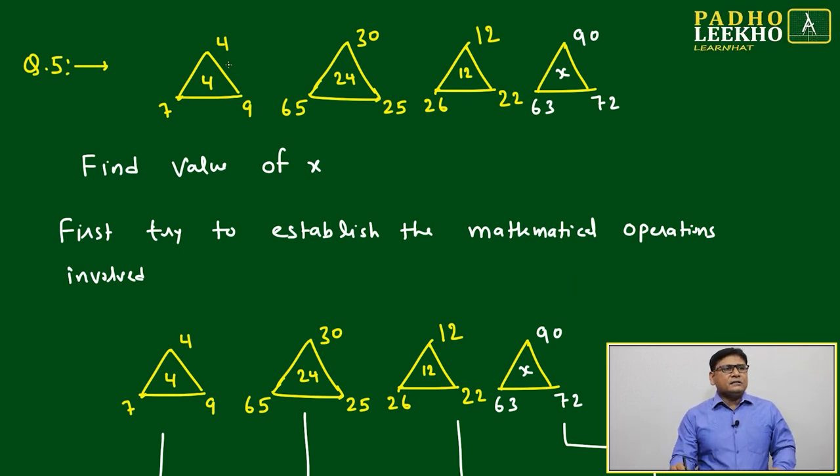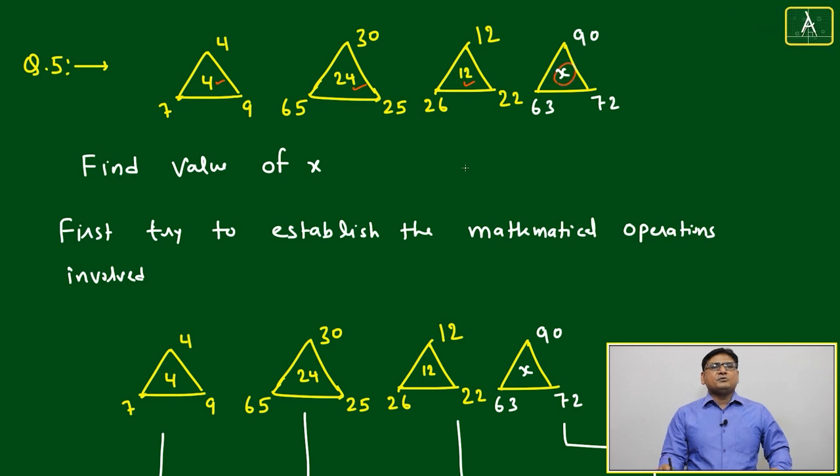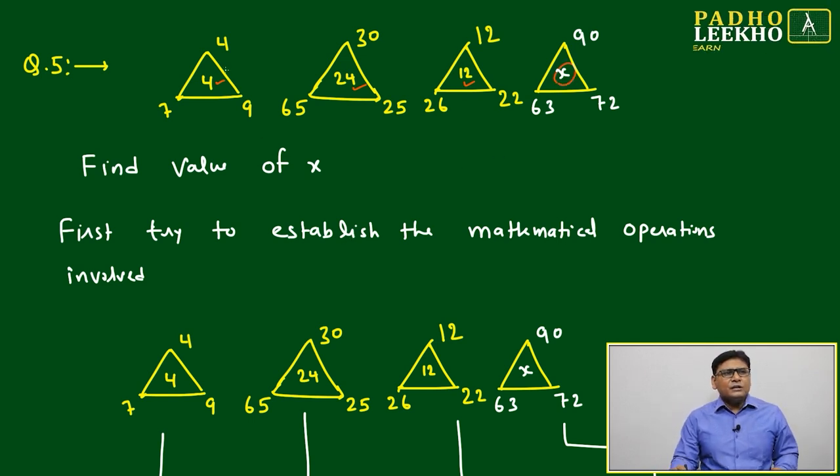Here we have 4, 7, 9 with center number 4; then 30, 65, 25 with 24; then 12, 26, 22 with 12; and finally 90, 63, 72 with x which you need to find. After looking at this pattern, we won't immediately be able to guess how these are interrelated.